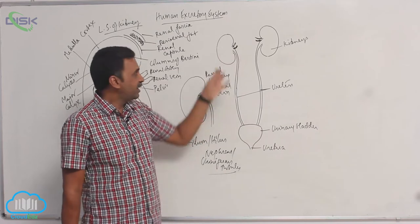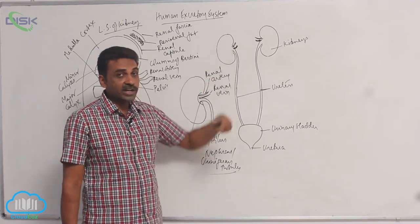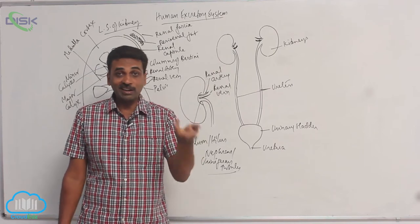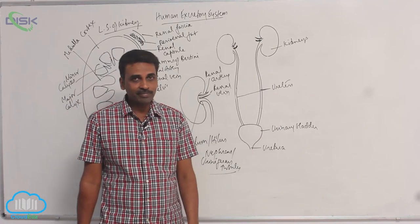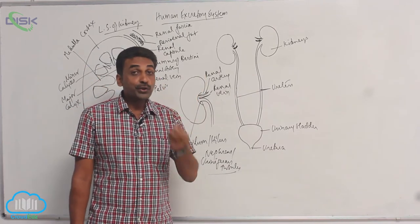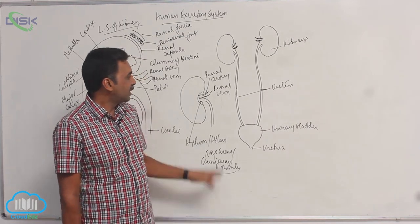So at the medial side, in the concave side, at the hilum region, ureters are originating. Along with renal artery, renal vein, lymph vessels, nerves, they are originating. They are thick-walled tubes. Remember, this concave side is facing towards the vertebral column.